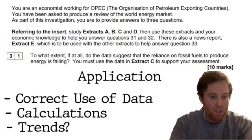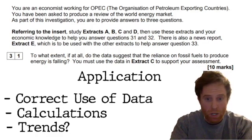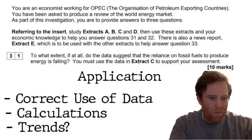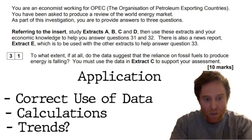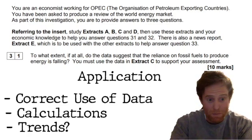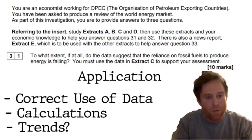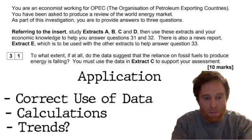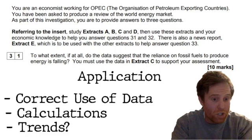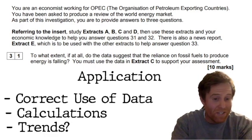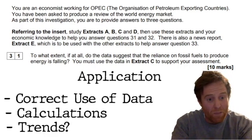My advice is to use the data, look at Extract C, and then take that data one step further — that might mean carrying out a calculation. Every year there will be different datasets and different types of calculations. Sometimes it might be specific, like working out GDP per capita if they give you population and GDP. Within this particular case, the main calculations are percentage changes or percentages of overall energy consumption. It could also be just looking at the trends across the years provided.